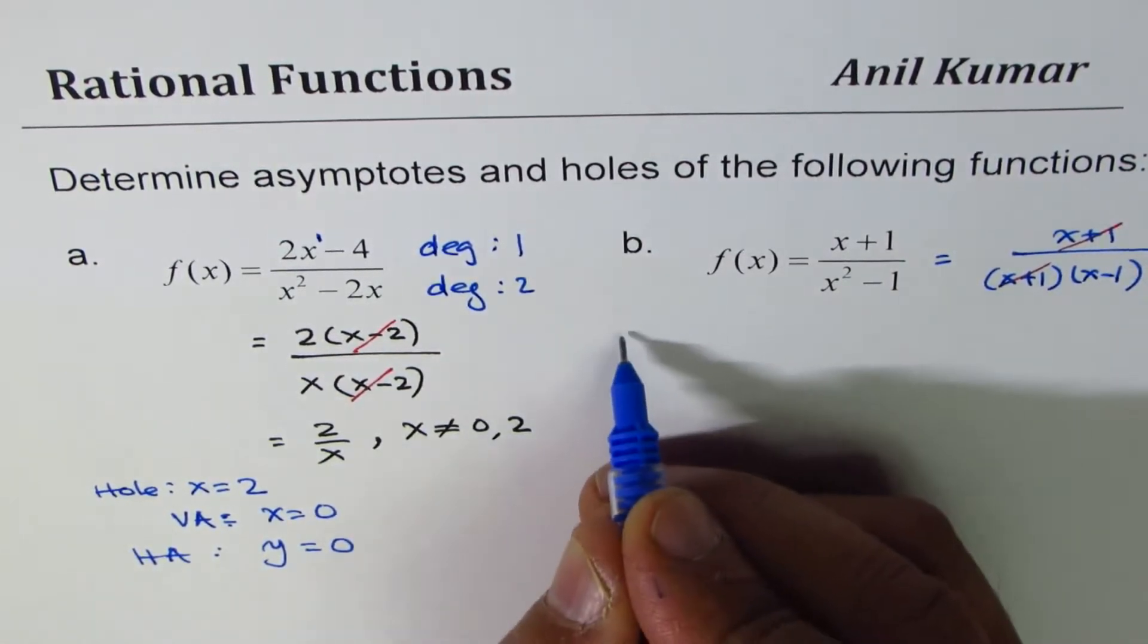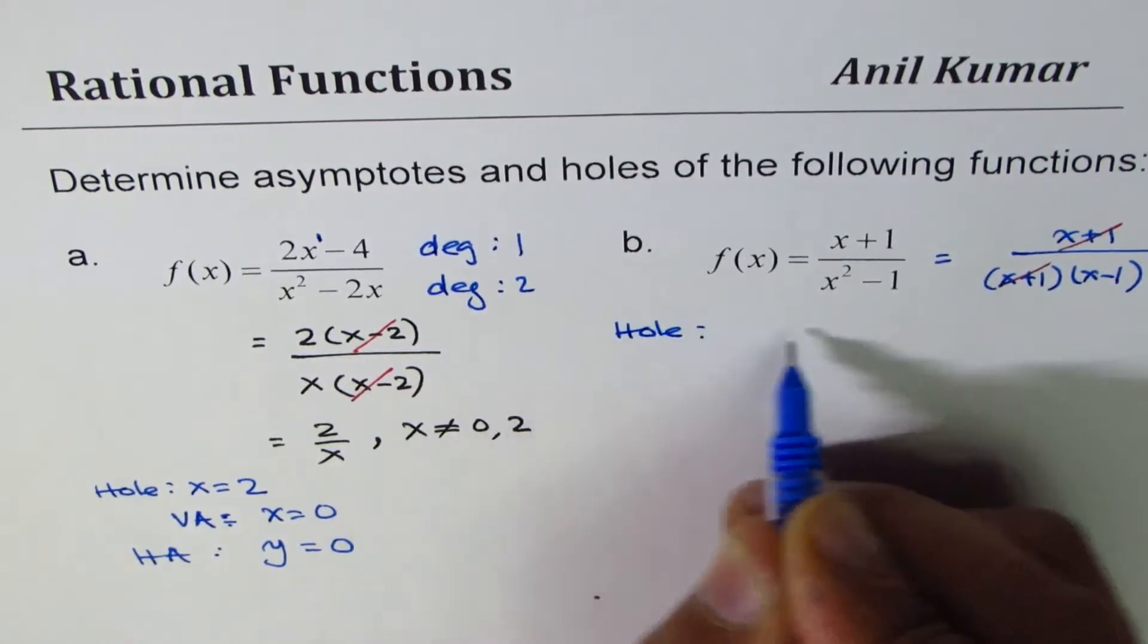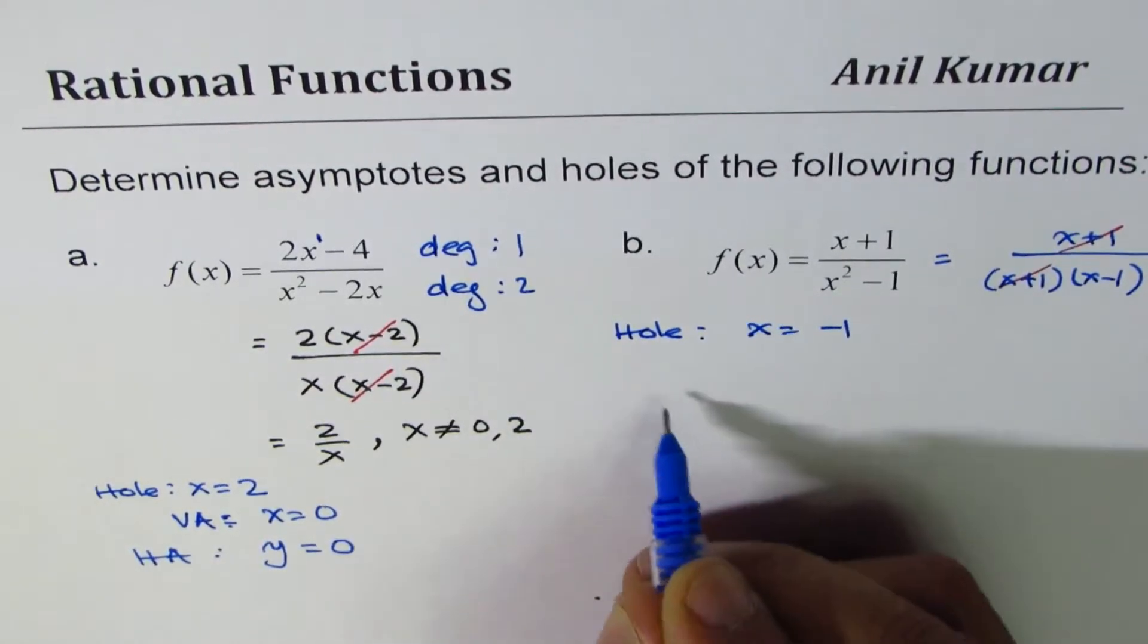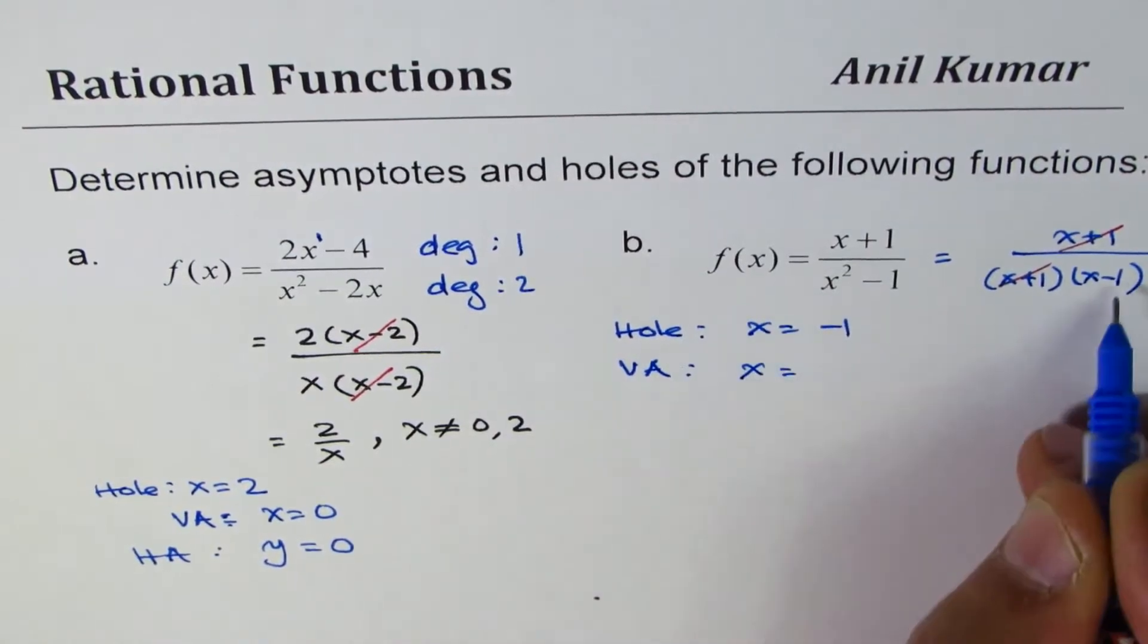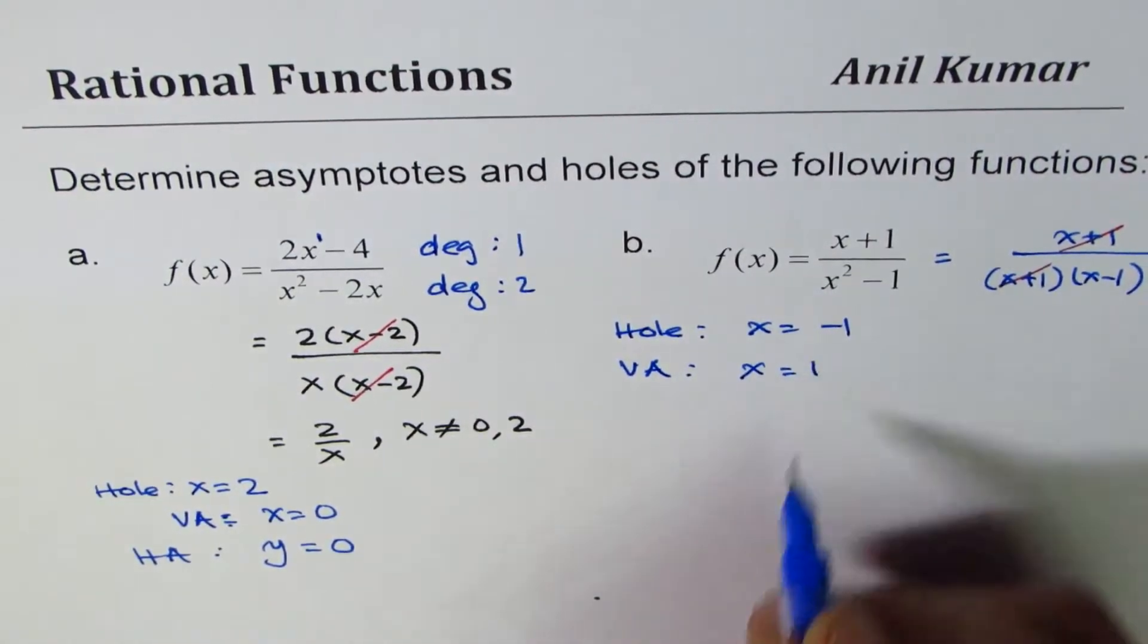So the factor that cancels is leading to a hole. We have a hole at x equals minus 1. We have a vertical asymptote at x equals the factor which did not cancel: plus 1.